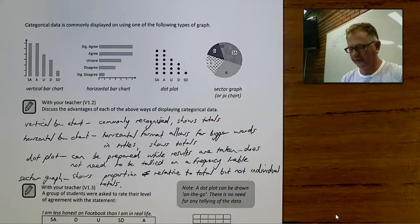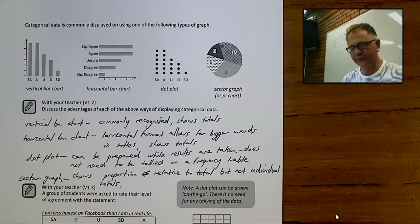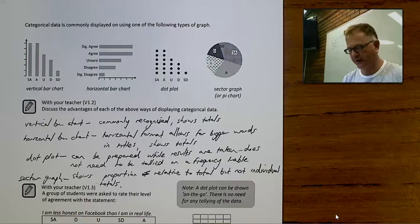We're asked to discuss the advantages of different forms of displaying categorical data. I've prepared a bit of an answer here.